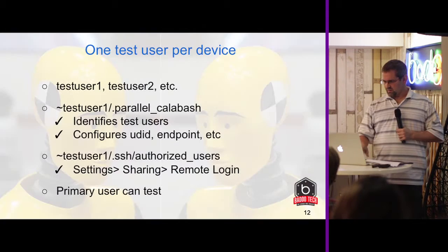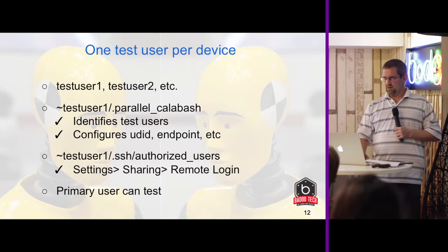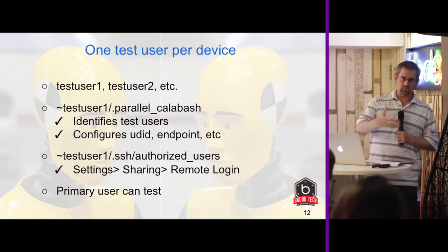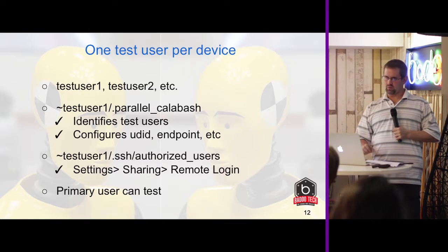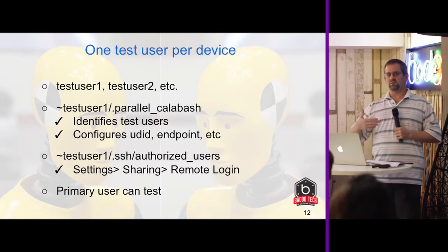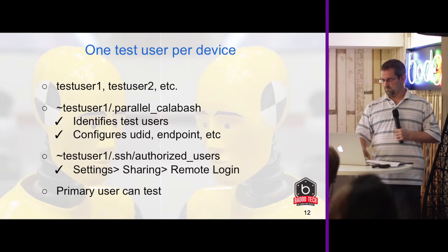So that's the two tests working at the same time on one host. The setup is fairly simple — we have multiple test users, we call them QA 1, 2, 3. Each test user is identified by having a .parallelcalabash file in their home directory, which identifies them as test users. It just scans the user home directories to see which users have that file defined. This configures the UDID and endpoint for the simulator or device. Each test user has to be authorized by SSH for the user that invoked parallelcalabash. You also have to do Settings Sharing Remote Login, otherwise there's an extra Apple security layer that blocks SSH. You can set the primary user as a test user as a fallback mechanism, so if you don't set any parallelcalabash stuff up at all, you can still invoke it and it'll kick up a simulator and work as a normal Cucumber invocation.